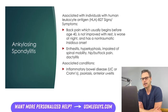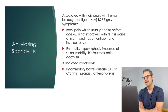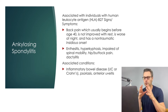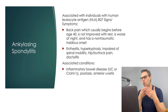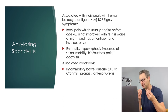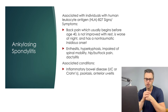Ankylosing spondylitis (AS) is an inflammatory arthritic disease that most commonly affects individuals who have human leukocyte antigen HLA-B27. Back pain is present in the vast majority of patients and usually begins before age 40. Characteristics that distinguish it from other musculoskeletal back pain include that it worsens at night, doesn't improve with rest, and has no history of traumatic incidents preceding the pain. The onset is typically insidious, with the patient unable to pinpoint exactly when the pain started. Patients can also have enthesitis — inflammation where tendons or ligaments insert into bone — commonly occurring in the heels.